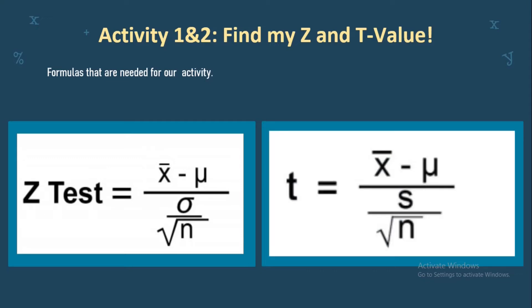The formula for T value is almost the same. It still uses the sample mean, the population mean, and the sample size. Although, the population standard deviation from the Z value formula is replaced by sample standard deviation. This is because the Z test is used when the sample size is greater than 30, while the T test is used when the sample size is less than 30. That is one of the key differences between the Z test and T test.